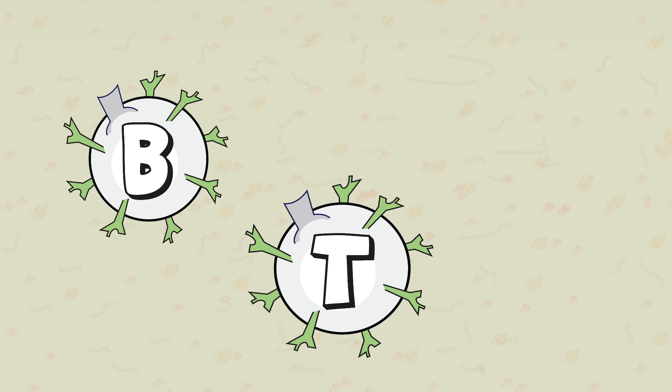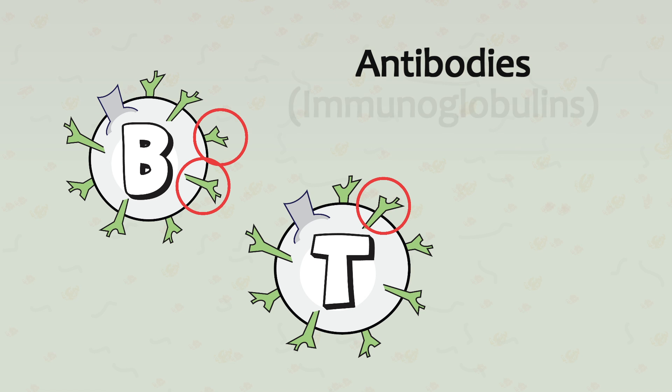B cells and T cells, on the other hand, are antigen-specific, and in this video we'll take a closer look. Both B cells and T cells utilize surface receptors in activating their functions. These surface receptors are protein molecules commonly known as antibodies and formally known as immunoglobulins.